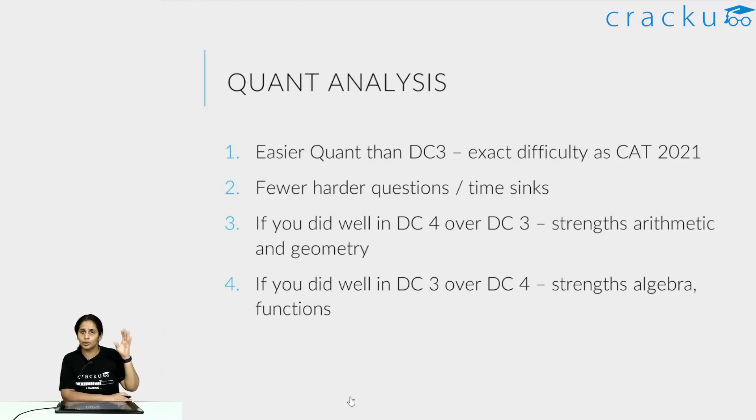If you are doing well in these kind of dashcat sections, I would think that this suggests that arithmetic and geometry is your strength. If you did better in Dashcat 3 than in Dashcat 4 quant, it would indicate that you are more comfortable in algebra, modern maths and functions. Based on what you did better in, that would give you an idea of where your strengths lie. If you did well in Dashcat 4, arithmetic and geometry is your strength. If you did better in Dashcat 3, then algebra functions, modern maths is your strength.